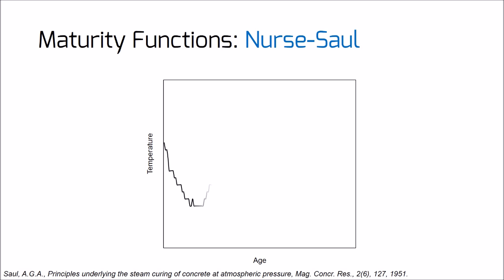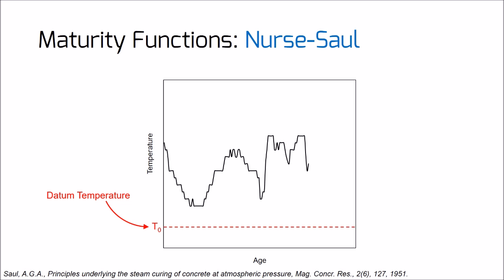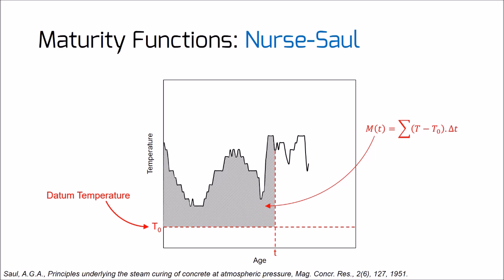These scientific researches led to the famous Nurse-Saul maturity function used today. The effect of time intervals with temperatures lower than datum temperature are removed. The function gives the area between the datum temperature line and the temperature history. Saul presented the maturity rule as: concrete of the same mix at the same maturity has approximately the same strength, whatever combination of temperature and time makes up that maturity. The Nurse-Saul equation assumes that strength gain is a linear function of hydration temperature.